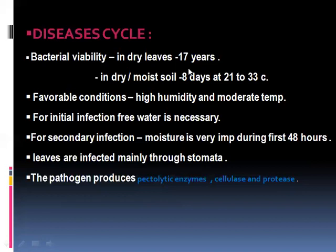Regarding the disease cycle, bacterial viability in dry leaves can last up to 17 years — a very long period. In moist soils, viability is eight days. The favorable temperature range is 21 to 33 degrees Centigrade, with high humidity and moderate temperature suitable for bacterial survival. For initial infection, free water is necessary.